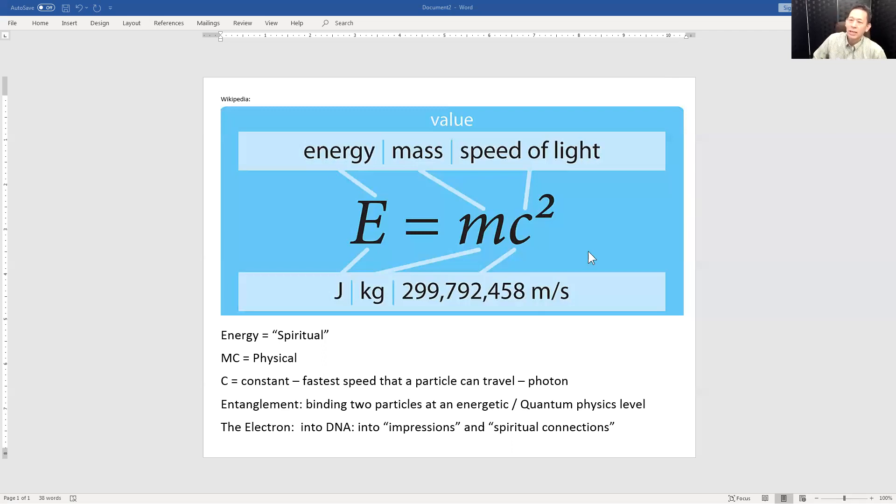So today's discussion, E equals MC squared. Now, last time we discussed spiritual law first, physical law second. Now with that, let's venture into Einstein's understanding of this because E, as you can see here, energy on the left side equals MC squared. Now,